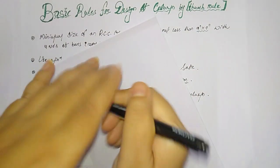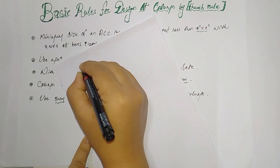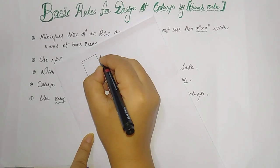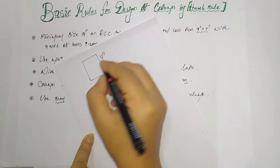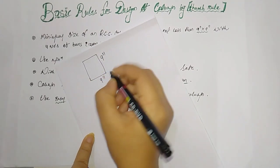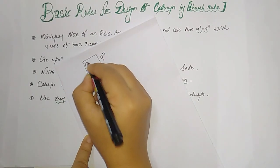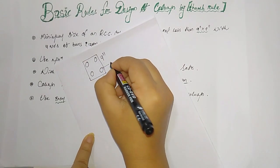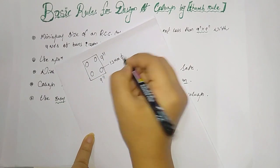Just as an example, if this is the column, then the dimension should be 9 inch and 9 inch, and there are four number of bars which is 12mm each.